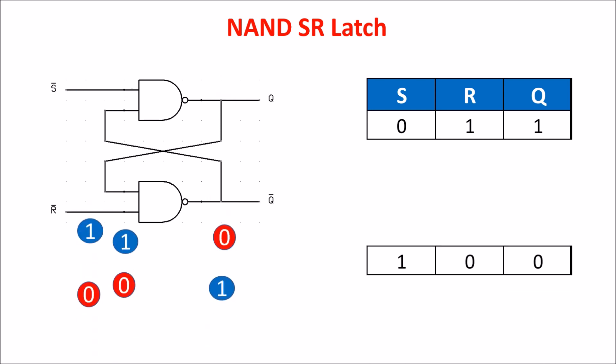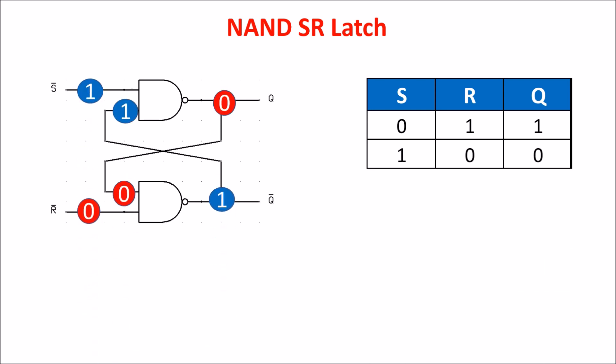If we give a zero pulse to reset keeping set to 1, we get 0 on the output. If we now come back with both inputs to 1, we can have 1 or 0 on the output depending on the previous situation. In this case our last pulse was the reset so we have a zero on the output. This is how the latch remembers a bit.